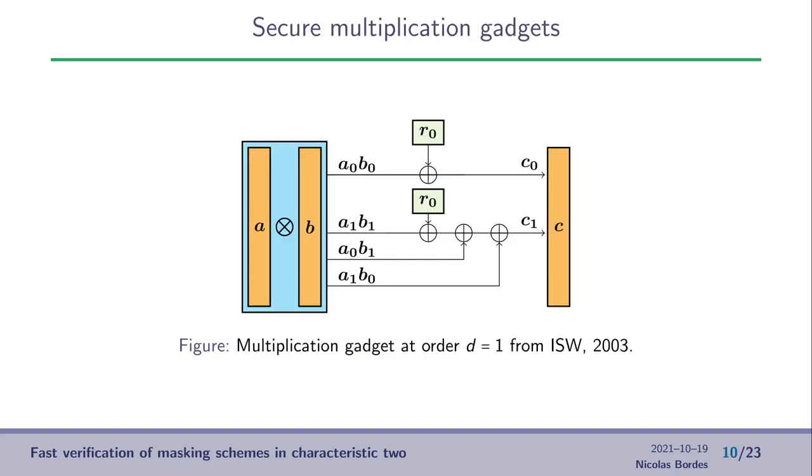Here is an example of such a gadget, multiplication gadget, at order D equals 1. First, we have the sharing of A and the sharing of B. We make the tensor product between these two to obtain all the A, I, B, J. And here we see that R0 is an additional random value that is used to ensure that the circuit is D-Private. As output, we have C0, C1, which is a valid sharing of the product of A and B.